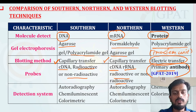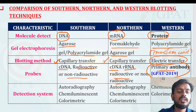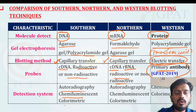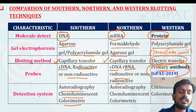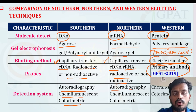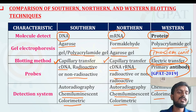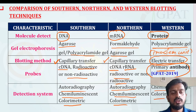This question was asked in GPAT 2019. The detection system for southern blotting includes autoradiography, chemiluminescent, and colorimetric detection. The same — autoradiography, chemiluminescent, and colorimetric — applies to northern blotting. But in case of western blotting, chemiluminescent and colorimetric techniques are basically used.